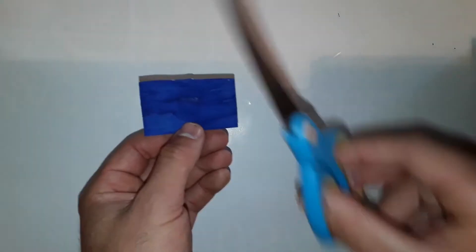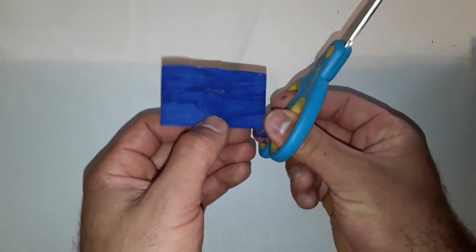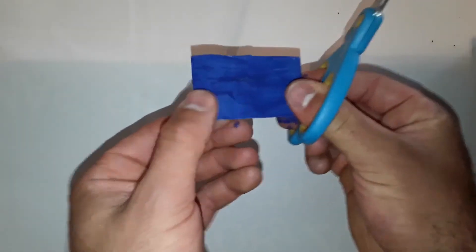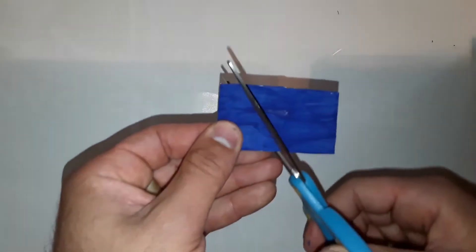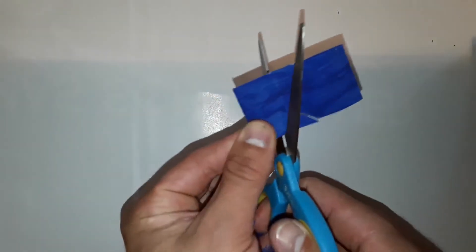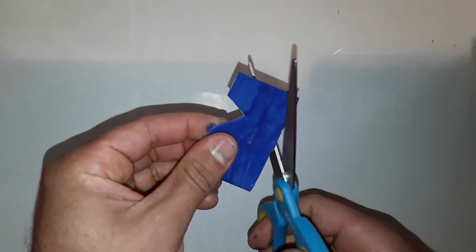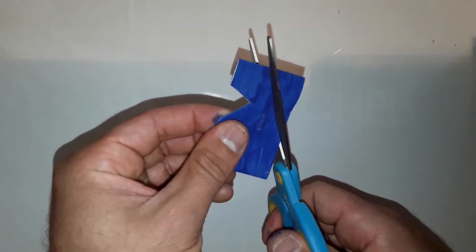And now you cut a triangle here. Careful! Almost to the middle, but not quite. You do this on both sides. This creates the back fin of the fish.